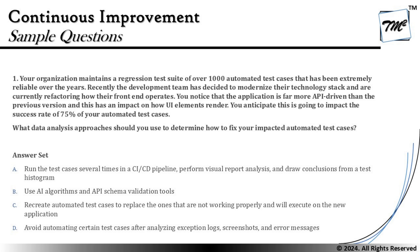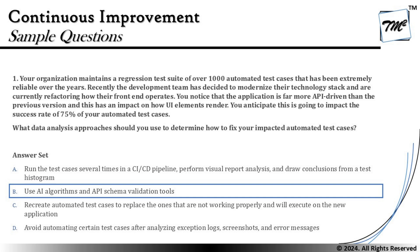With that, we can easily conclude that the right answer for this particular question is B — use AI algorithms, that is artificial intelligence, and API schema validation tools to determine how to fix your impacted automated test cases. That's how simple it can be, given that you have adhered to your syllabus and are following it. Let's move on to the next question.